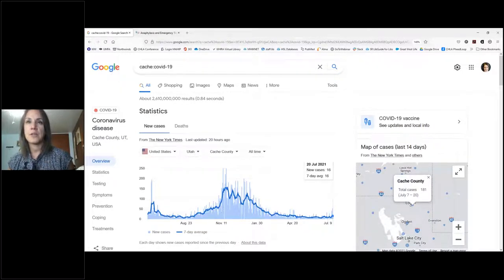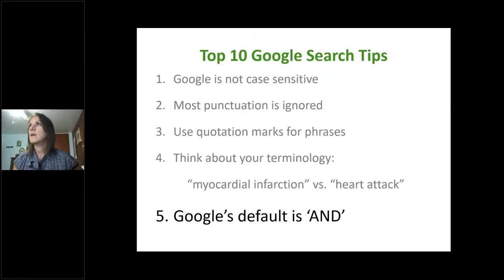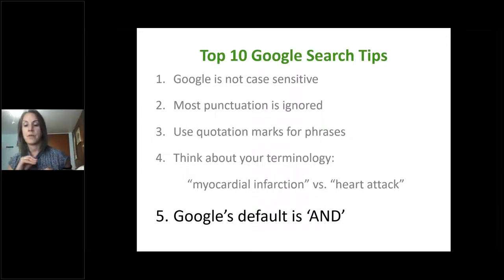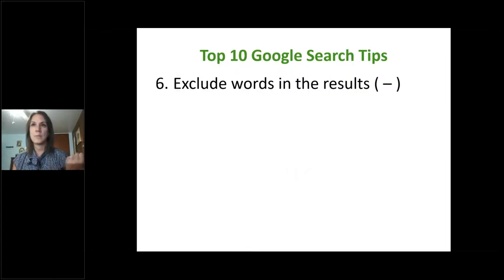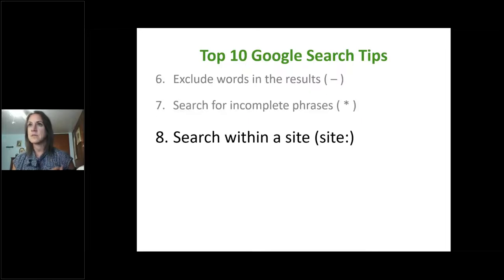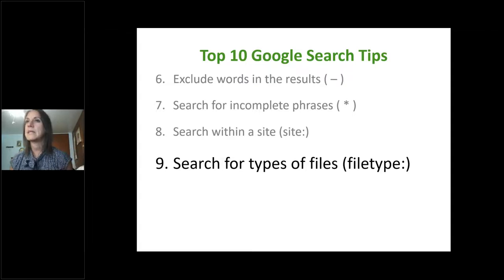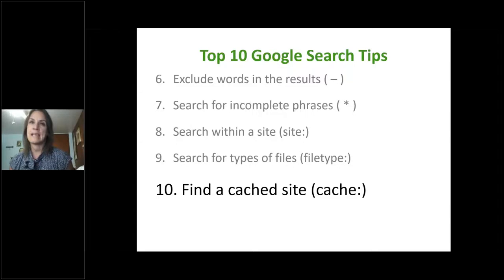Here's a quick recap of our top 10 tips: Google is not case sensitive; most punctuation is ignored; use quotation marks for phrases; think about technical versus lay terminology — even regional terminology; Google's default is AND; exclude words using the dash sign; search incomplete phrases using an asterisk; search within a specific site; search for specific file types; and search old cached sites.